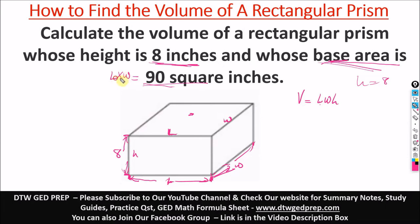From here, L×W is 90 square inches. We're just putting this into our formula for volume of a rectangular prism. Since L×W is 90, we put 90. That's 90 square inches times H, which is 8 inches. We're going to finally get our volume: 90 times 8 will give us 720.